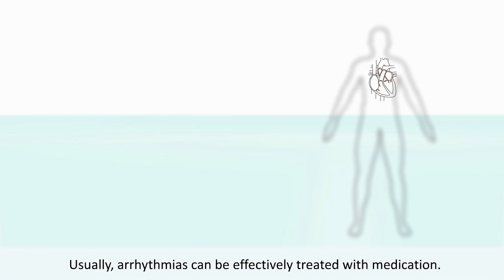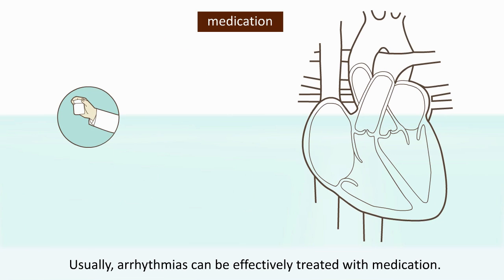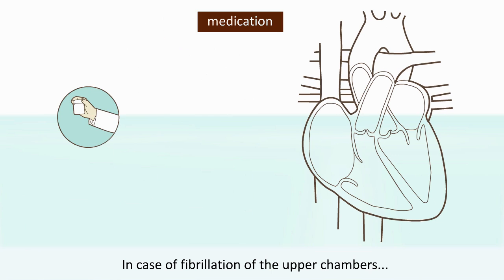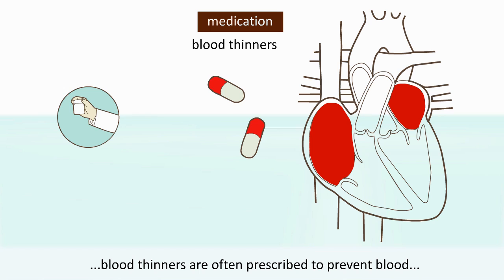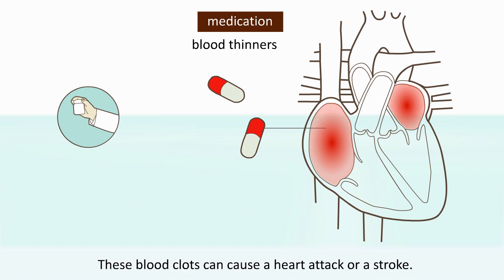Usually arrhythmias can be effectively treated with medication. In case of fibrillation of the upper chambers, blood thinners are often prescribed to prevent blood clots from forming in the upper chambers. These blood clots can cause a heart attack or stroke.